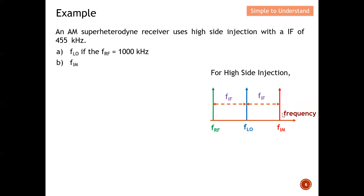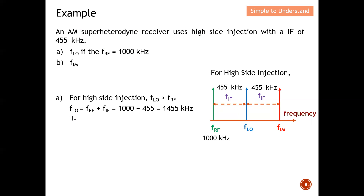The question asks: what is FLO if FRF equals 1000 kHz? For AM, FIF equals 455 kHz. Since this is high side injection, FLO = FRF + FIF = 1000 kHz + 455 kHz = 1455 kHz.